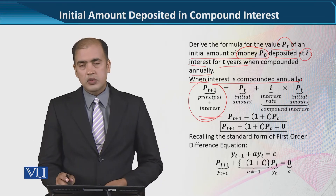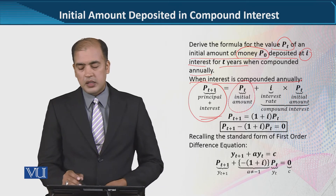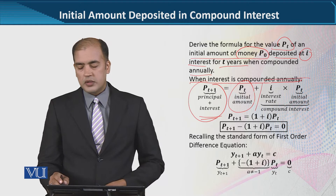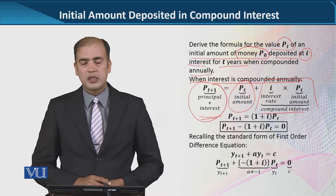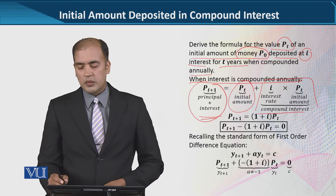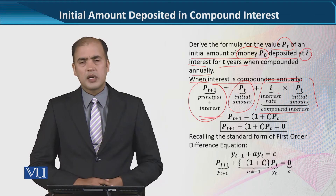The initial amount and the compound interest it will earn — you can see that the initial amount will multiply by the interest rate.